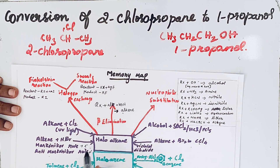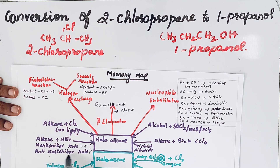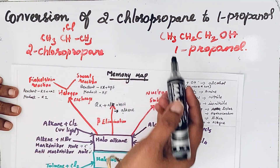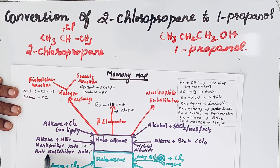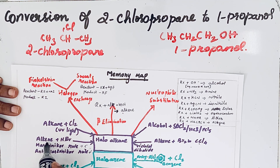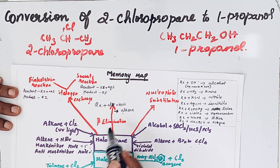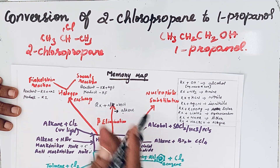To convert from secondary to primary position, we can use Markovnikov's rule or anti-Markovnikov's rule. Here we are going from secondary to primary, so we are going to use anti-Markovnikov's rule. This means we need an alkene intermediate, which can be obtained by beta-elimination of the haloalkane.